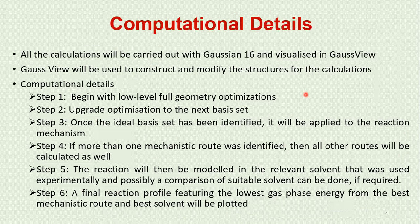All calculations will be carried out using Gaussian 16 and will be visualized in GaussView. GaussView will also be used to construct and modify structures for the calculations. I will begin geometry optimizations using low-level DFT basis sets and functionals, then upgrade to higher basis sets and functionals to identify the best one for this reaction. During the calculations, especially when looking for transition states, it is possible that other intermediates may be present, so all mechanistic routes will be investigated.